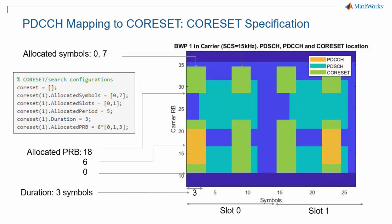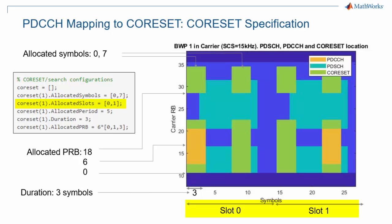We will now look in more detail at some of the parameters provided by 5G new radio to specify a core set. The pictures on these slides were generated with MathWorks 5G Toolbox. Here we can see the core set in green. The time duration is specified to be 3 OFDM symbols. The frequency occupancy is specified in terms of groups of 6 resource blocks, namely groups 0, 1, and 3, with group 2 not occupied. Symbol allocations 0 and 7 mean the core set is present starting at OFDM symbols 0 and 7. The core set is allocated in slots 0 and 1.